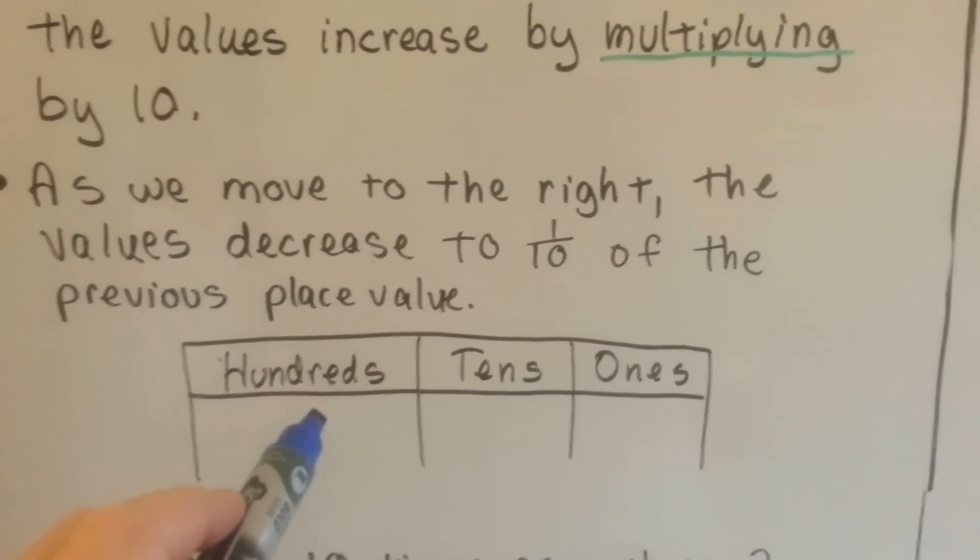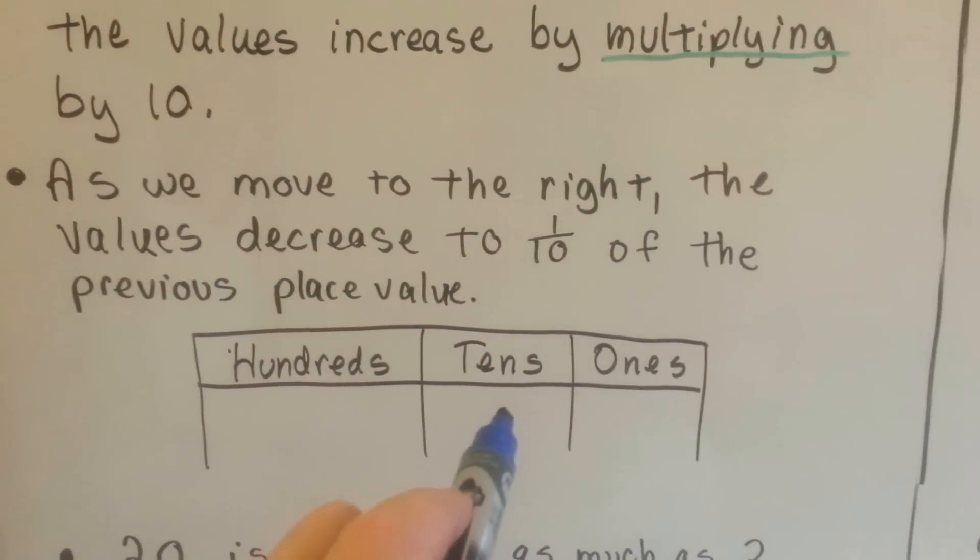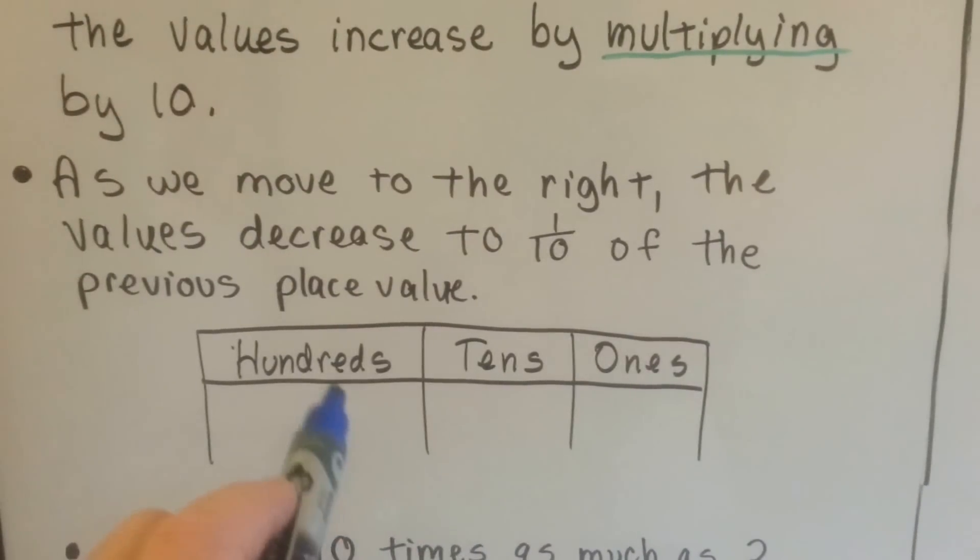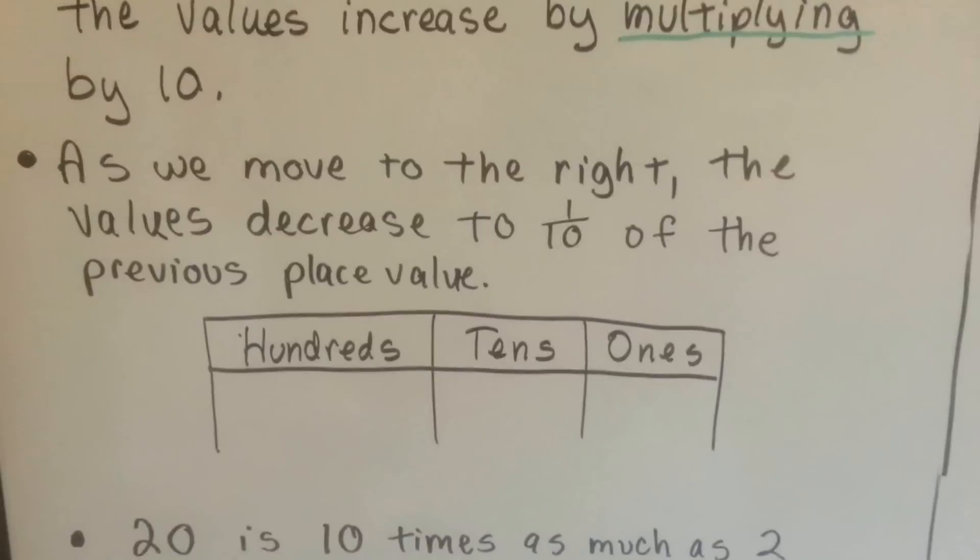So if we had 100 and we moved over and had a 10, one of the 10s would be 1 tenth of that 100 because it takes 10 of them to make the 100.